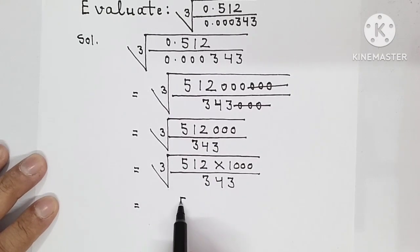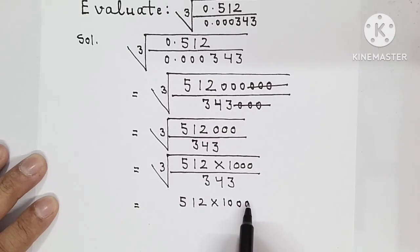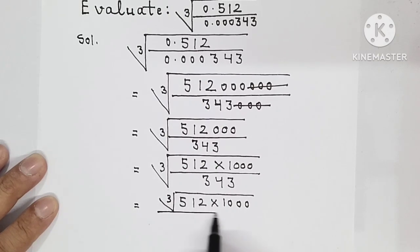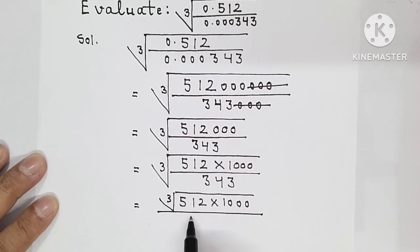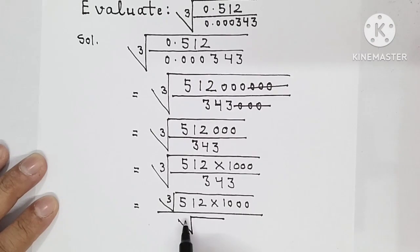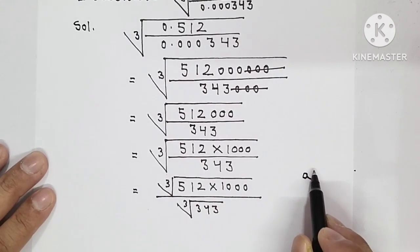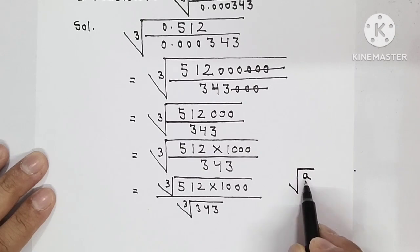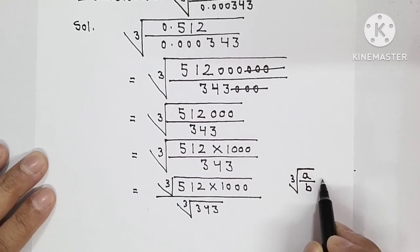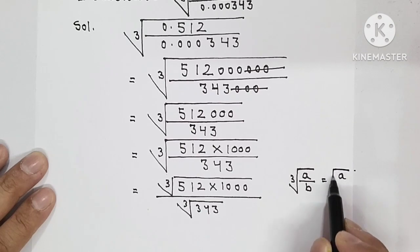Now, 512 times 1000, its cube root separate, upon 343 cube root separate. You have to apply the property: cube root of a upon b equals cube root of a upon cube root of b.